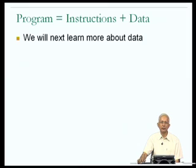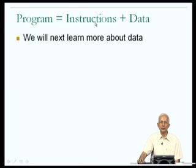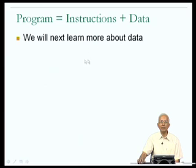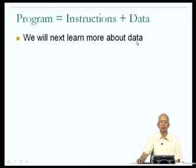Now that we have understood what a program is — a description of algorithms and data structures which you have written to achieve some specific objective — we understand that a program will have associated with it instructions or steps describing the algorithm as well as data. We will therefore start by trying to learn a little bit about data. If you want to understand what happens when a program executes, you will have to understand a lot about what happens to data.